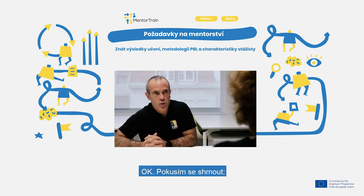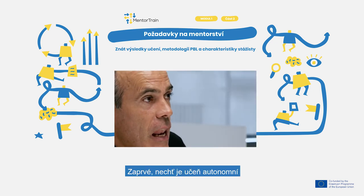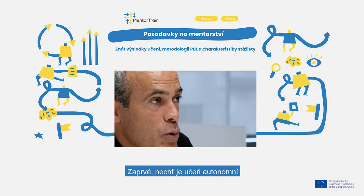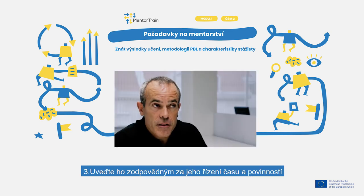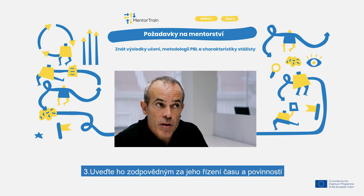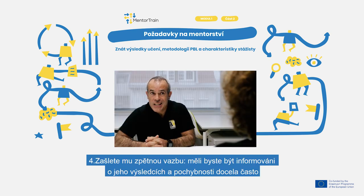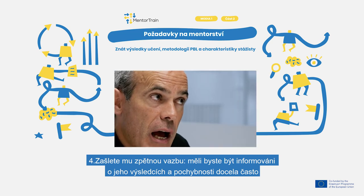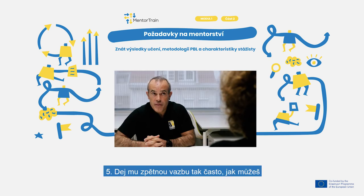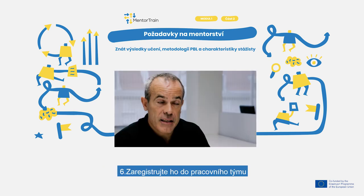I will try to summarize. First, let the apprentice be autonomous. Second, give him some instructions and let him reach his own conclusions. Third, make him responsible for his time and duty management. Fourth, ask him for feedback — you should be informed about his results and doubts quite often. Fifth, give feedback to him as often as you can. And sixth, enroll him in a work team.